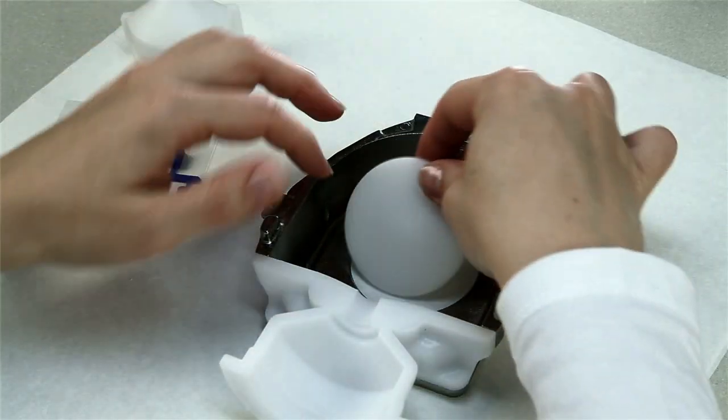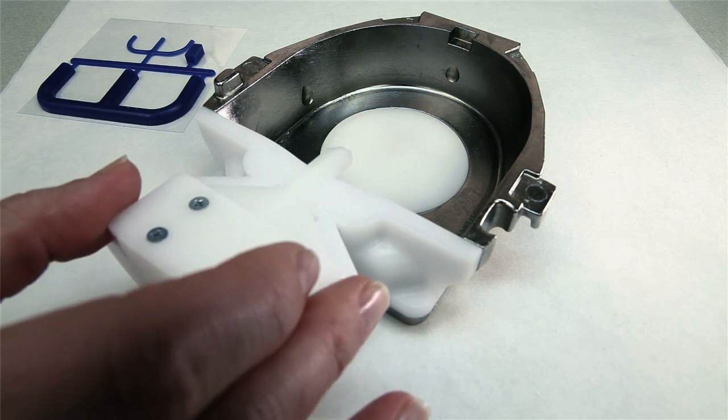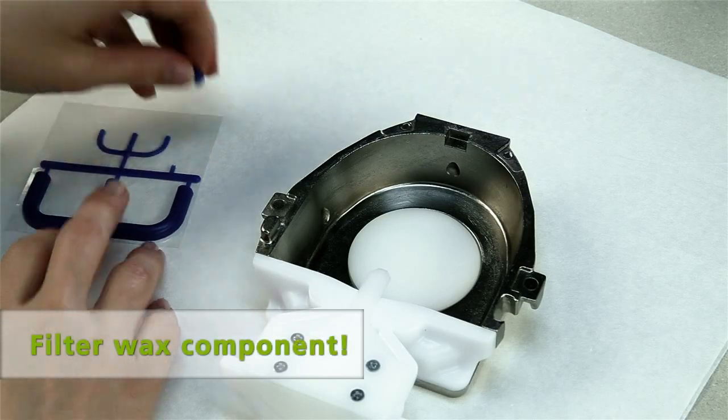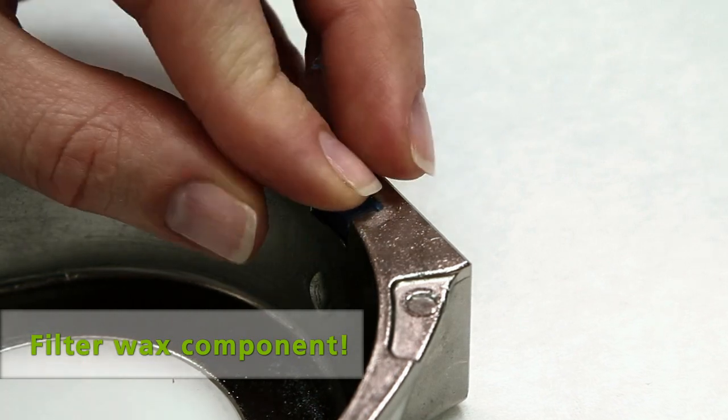Now place the flask lid, the excess former half, and very important, the filter wax component in the recess intended for that purpose.